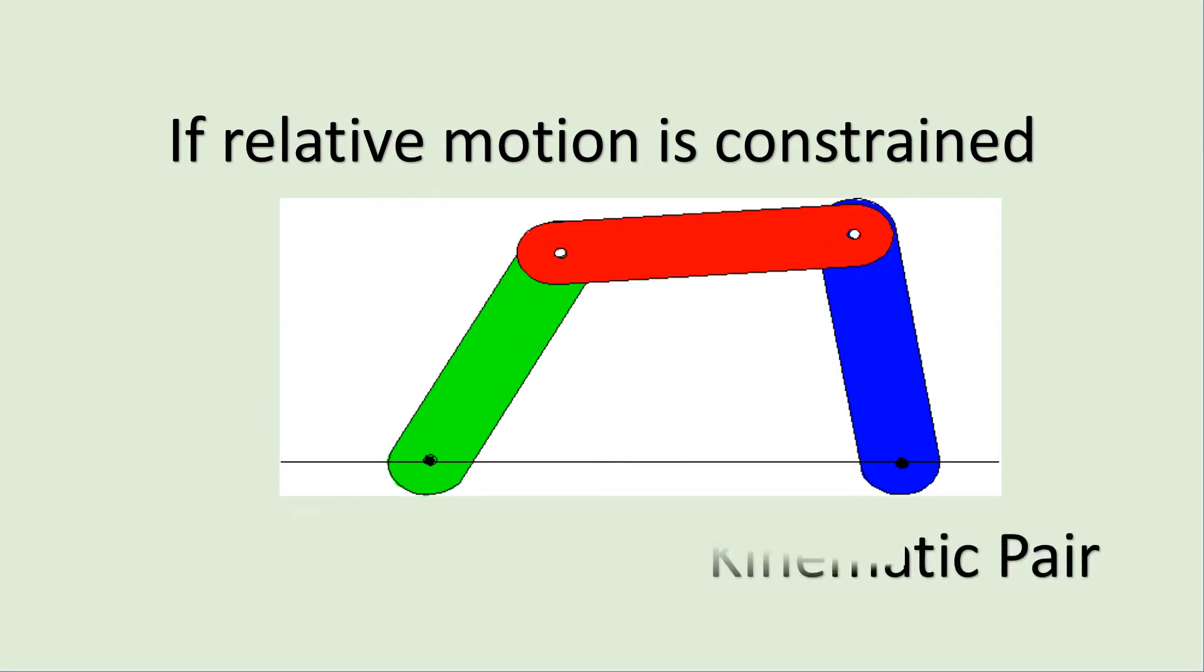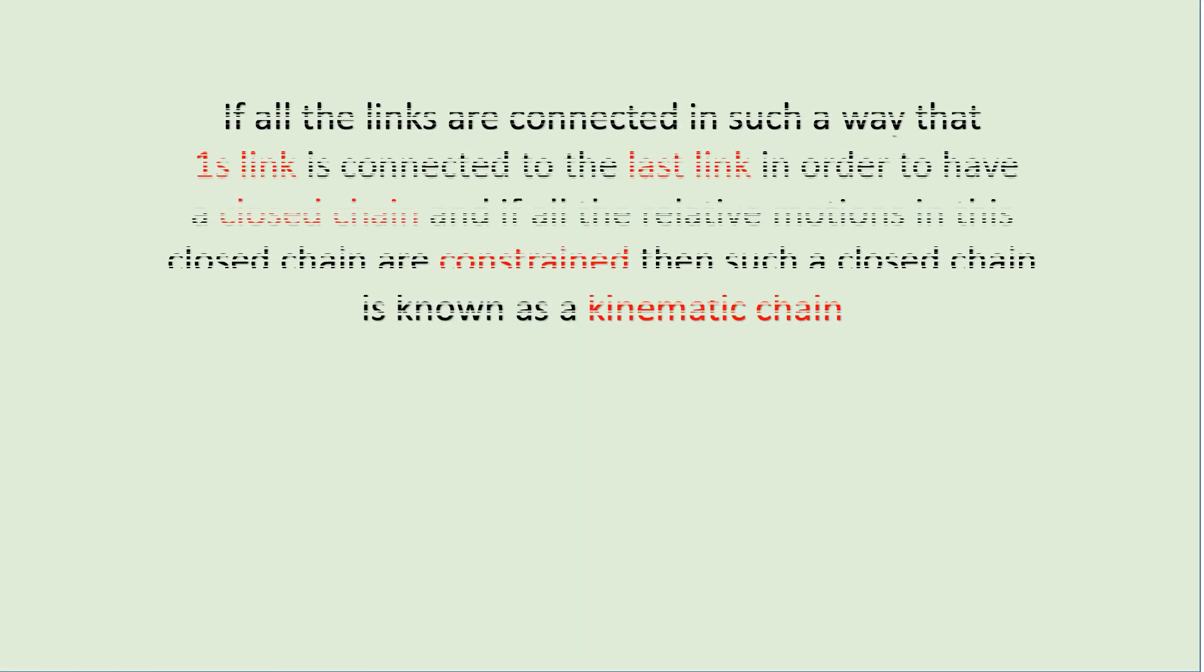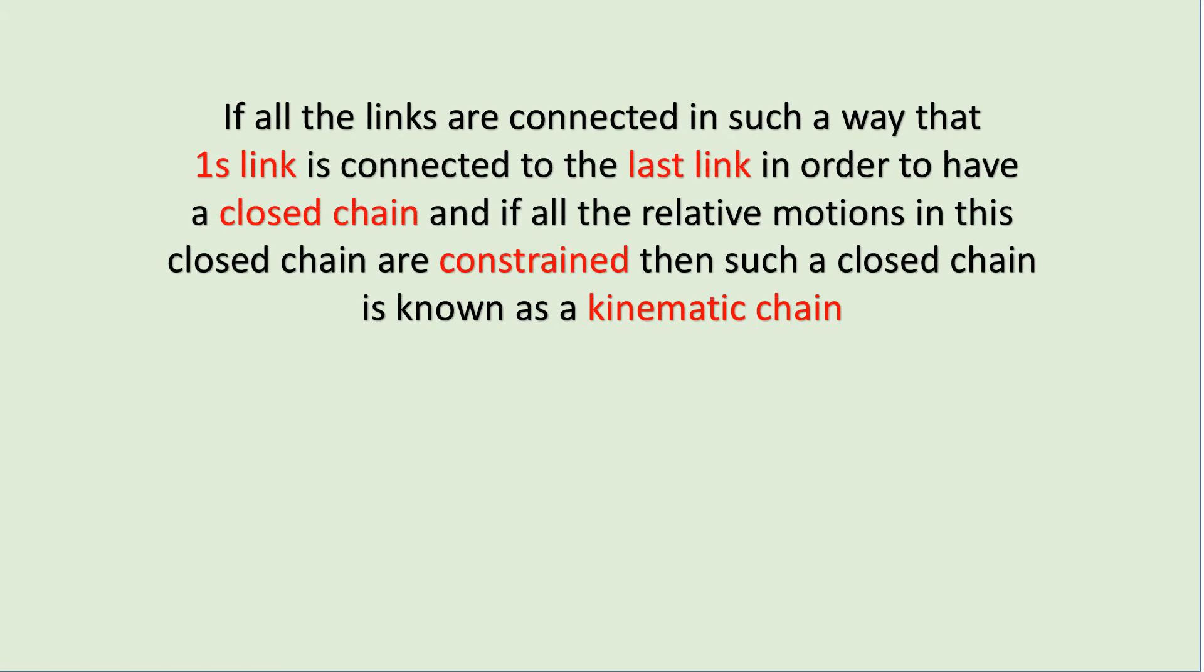If all the links are connected in such a way that the first link is connected to the last link in order to have a closed chain, and if all the relative motions in this closed chain are constrained, then such a closed chain is known as a kinematic chain.